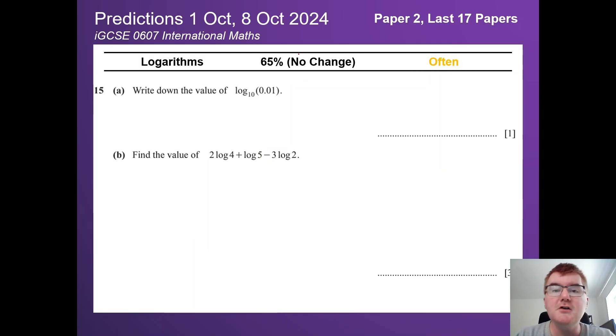On to logs, no change at 65%. Generally does come up on paper 2 but can appear on paper 4 as well. Here are some very up-to-date questions. You need to be able to work with bases, but more typical here is the 3 marker where you have to simplify a logarithmic expression.